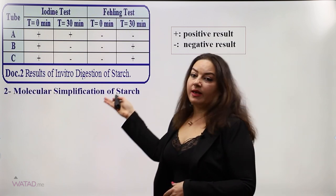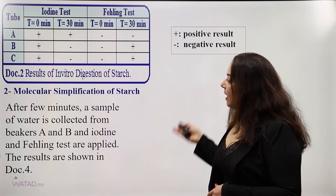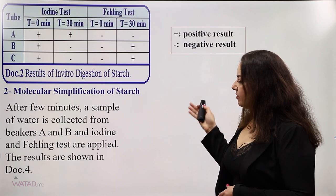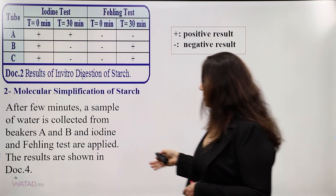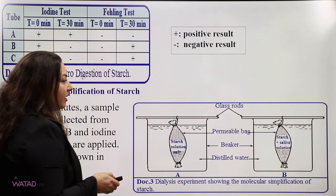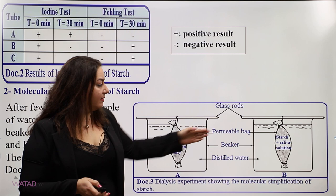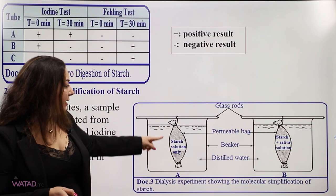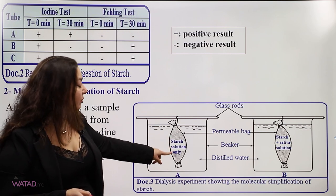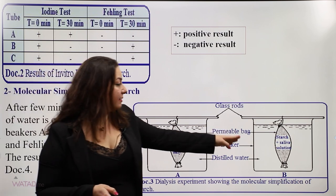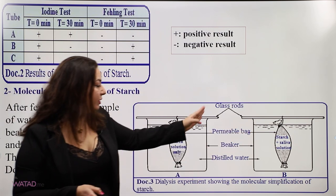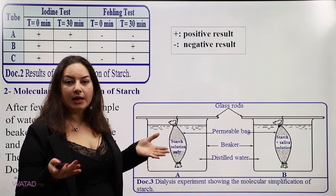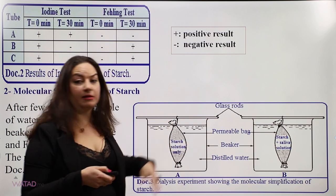Now let's see the molecular simplification of starch in more detail. In a second experiment, we use two permeable bags placed in beakers containing distilled water. In the first setup, the bag contains starch solution only. In the second setup, the bag contains starch plus saliva solution. The permeable bag has pores that allow molecules to pass from the bag into the distilled water.